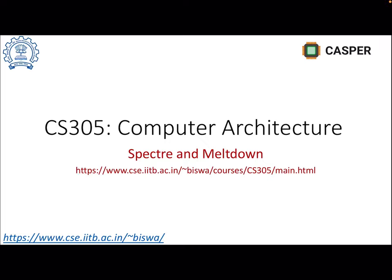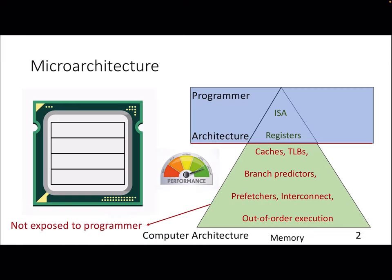Welcome to this lecture on microarchitecture security. We will be talking about two microarchitecture attacks called Spectre and Meltdown. So far in this course we started with the notion of ISA registers — what programmers can see and what programmers can do — and then we talked about the interface after which programmers can't access the structures directly.